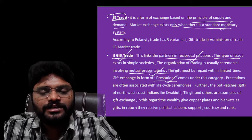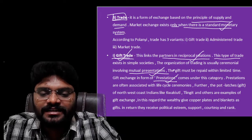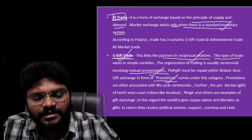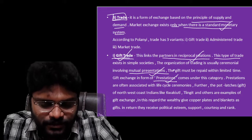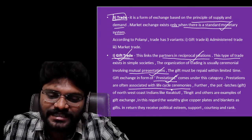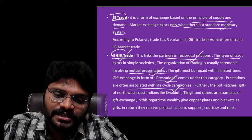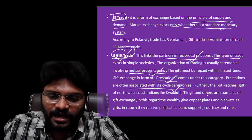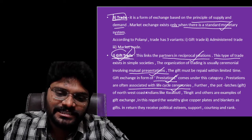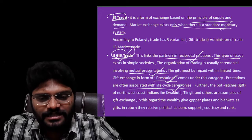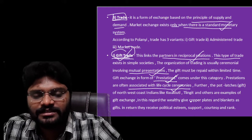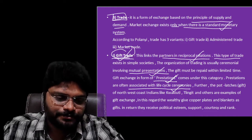For example, if you attend a relative's marriage ceremony with gifts and they later come to your own marriage ceremony and reciprocate with a gift — that repayment is called a prestation. All prestations associated with life cycle ceremonies come under gift trade. The classical example is the potlatch, where the potlatch giver distributes goods to guests. Also, giving money or physical goods to the bride's father during marriage comes under gift trade.